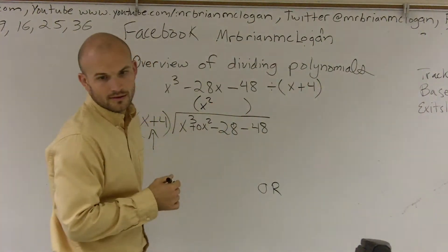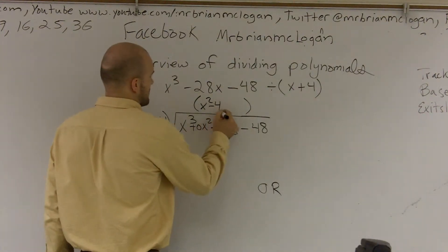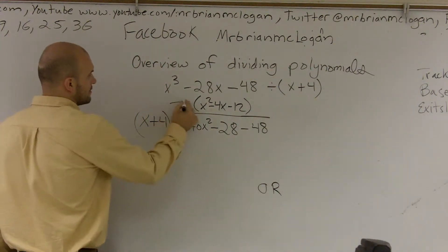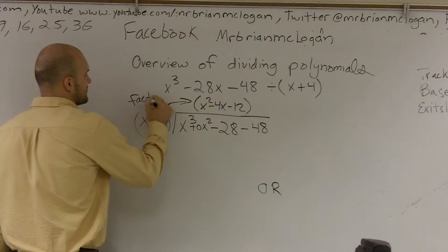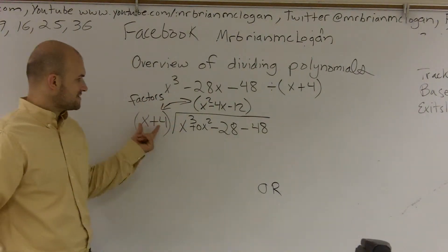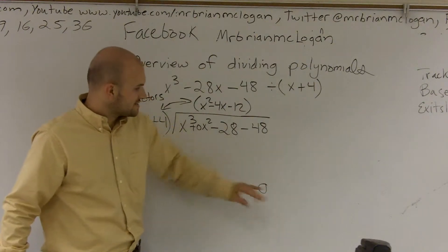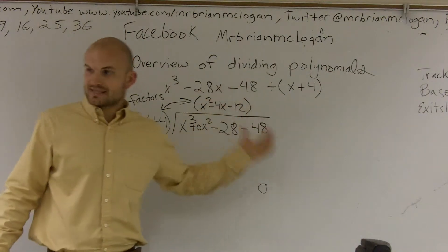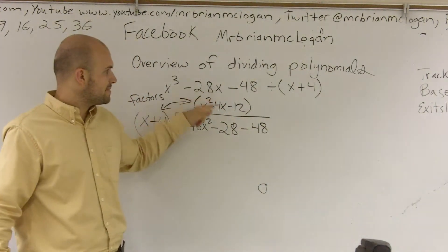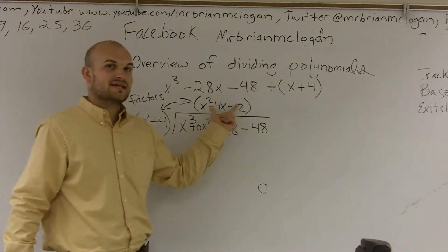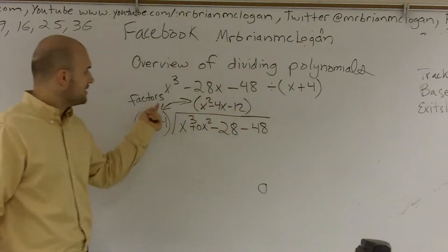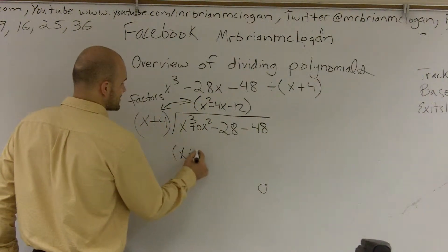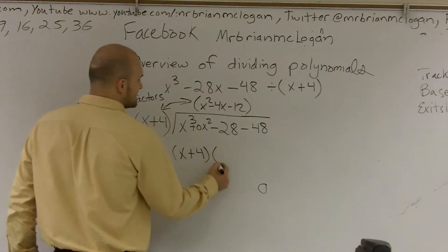Which will be x squared minus 4x minus 12. Well, what these two are called are our factors. Because I know that x plus 4, since I get a remainder of 0, means it's a factor. Therefore, this evenly divides into it, and it divides into it x squared minus 4x minus 12 times. Now, I can factor this out a little bit farther, which I'm going to do in just a second. But so far, these are our two factors. And remember, we can set up linear factors to find our zeros.